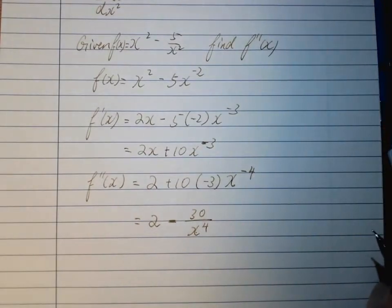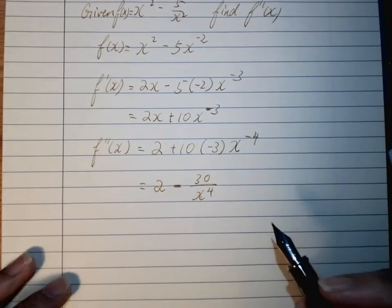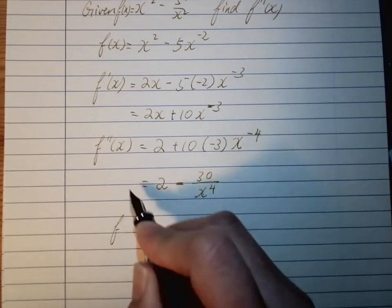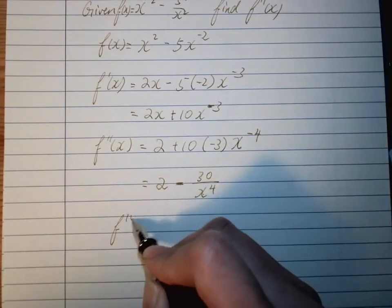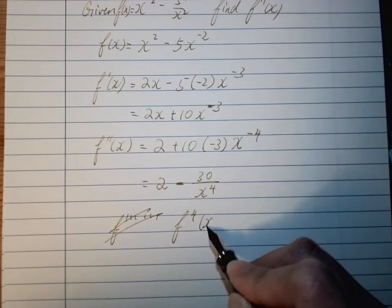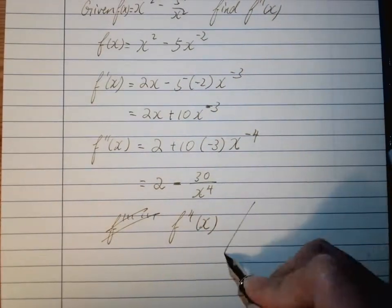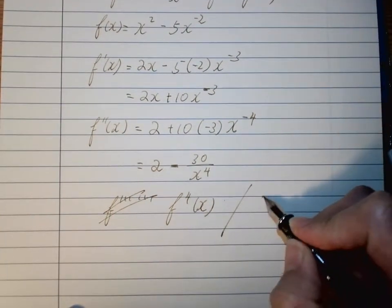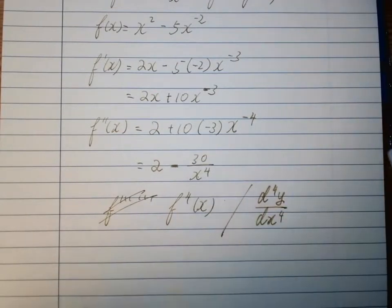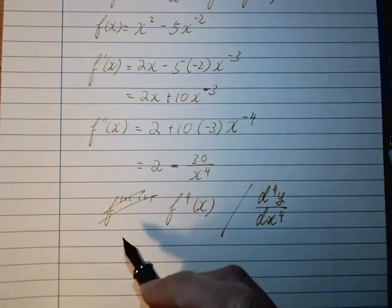Sometimes they will have higher order derivatives. Instead of writing dash dash dash to the end, we'll write f^(4)(x) if it's differentiated four times. Similarly, we can write d^4y/dx^4. Make sure the little 4 goes smaller in the notation.